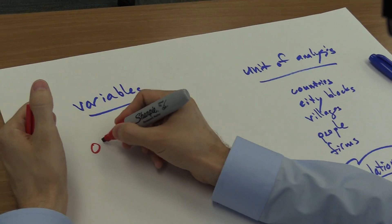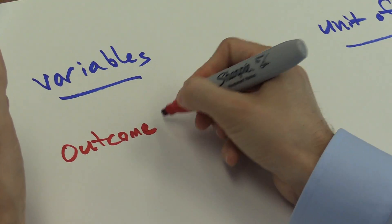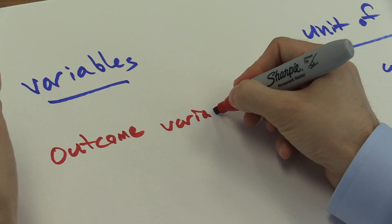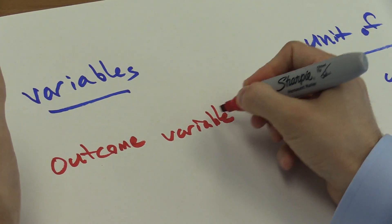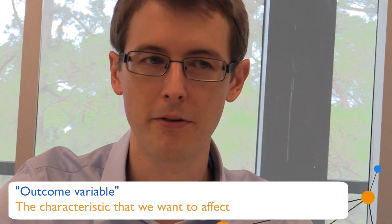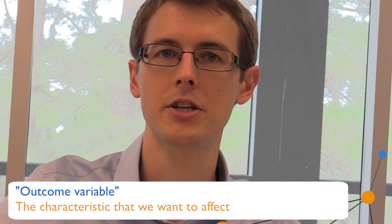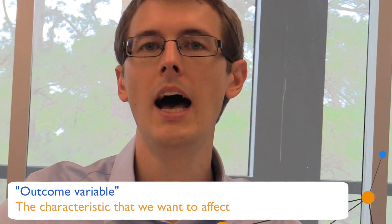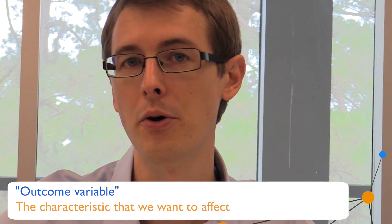There are two main variables that we have to measure. The first is the outcome variable. This describes the characteristic that we want to affect — the characteristic that we want to change. For example, how healthy you are in your old age.